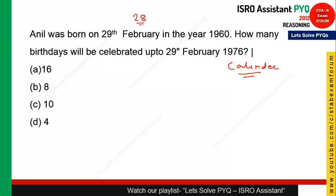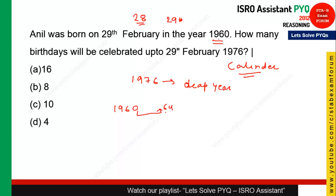We need to find how many birthdays will be celebrated up to 29th February 1976. Since 29th February only comes in leap years, we jump every 4 years: 1960, 1964, 1968, 1972, 1976 — that gives us 1, 2, 3, 4 birthdays. So option D is the right answer.